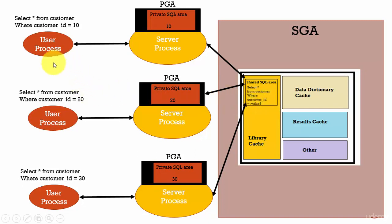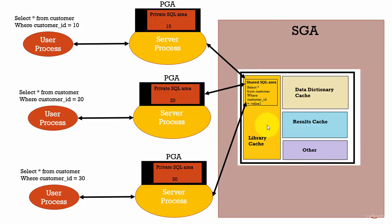Suppose more users are running a SQL statement and there is no space in the library cache. Oracle Database will deallocate the space for some SQL statements by using the least recently used algorithm, so that new SQL statements have enough space in the library cache. If a user is executing a SQL statement and that SQL statement is found in the library cache, then Oracle Database need not do any parsing — it can directly execute. But if the execution plan of a given SQL statement is not found in the library cache, then Oracle Database has to do the parsing, generate the execution plan, and then run the SQL statement. That is why it is advisable to have a good amount of library cache so that you can store a lot of SQL statements' execution plans.